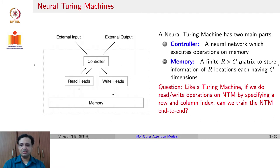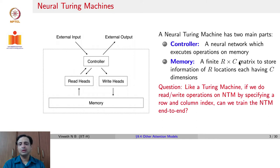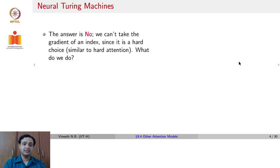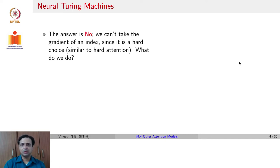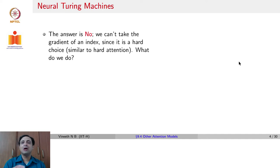Now let us ask a question: like a Turing machine, if we do read-write operations on an NTM by specifying a row and a column index — say we want to read the third row and the tenth column — can we train such an NTM end-to-end using backpropagation? The answer is unfortunately no, because you cannot take the gradient of an index since it would be a hard choice, similar to hard attention. Just as in a CNN, if you wanted to focus only on one patch in a feature map and only that patch should be processed through the rest of the network, that would be equivalent to hard attention, which cannot be backpropagated through.